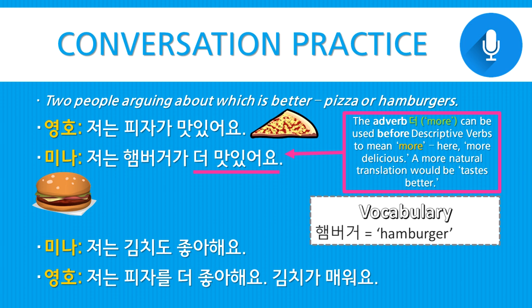Notice here, 저는 uses the topic marker, and 햄버거가 uses the subject marker — they're both used in the same sentence. That's because although 민아 or 영호 is talking about themselves (저는), what they're saying is about the subject of the verb 맛이 있다, which is not themselves but something else. So as for me, hamburgers or pizza taste delicious — they're not saying that I am delicious. Also note that the adverb 더, meaning 'more,' can be used before descriptive verbs to mean more of that quality. Here, 'more delicious' — a more natural translation could be 'tastes better.'